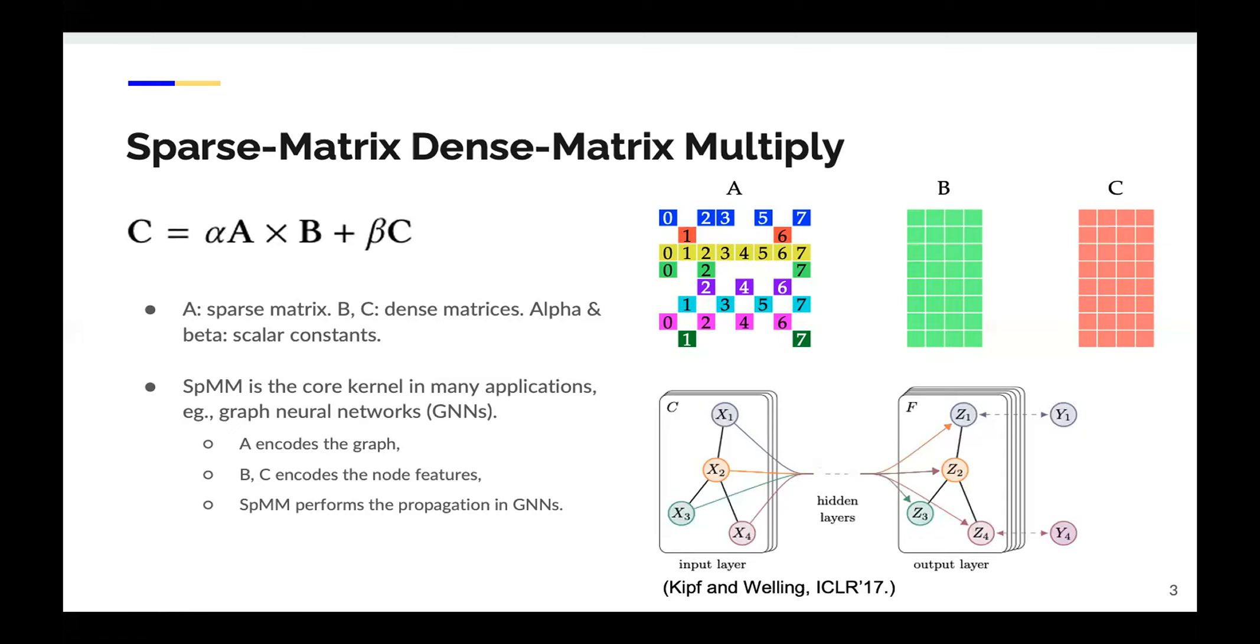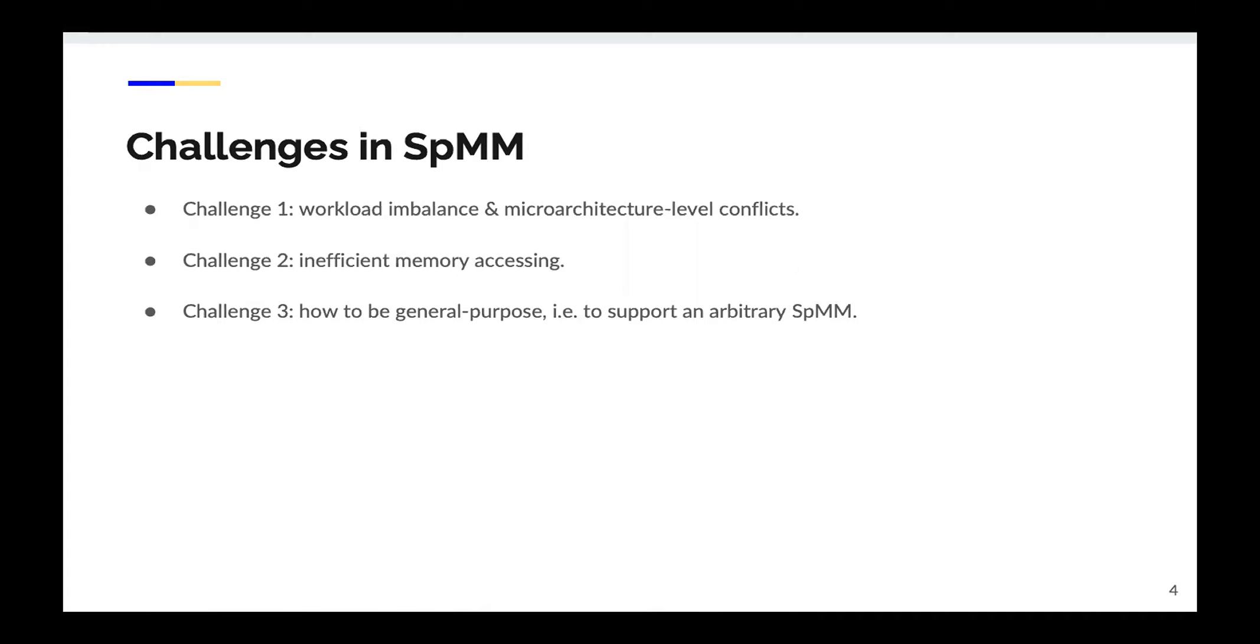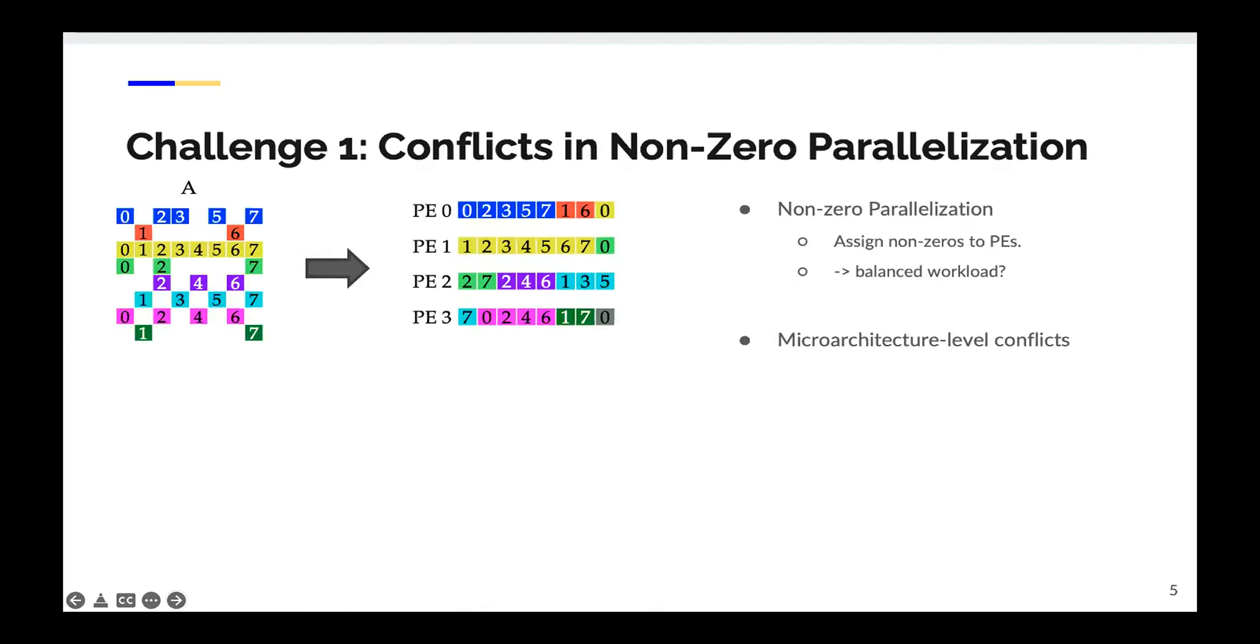There are three major challenges in SpMM acceleration. The first one is the workload imbalance and microarchitecture level conflicts. Second is the inefficient off-chip memory access. The third one is how to be general purpose to support an arbitrary SpMM. In the following slides, we will introduce the details about these challenges and solutions.